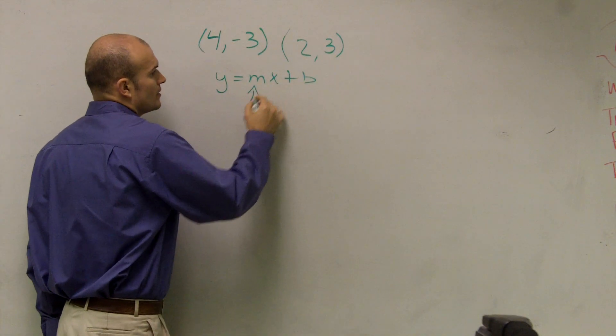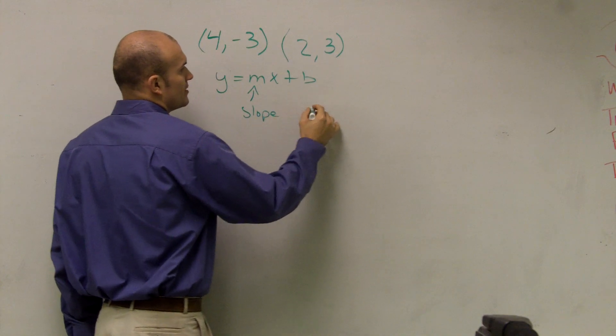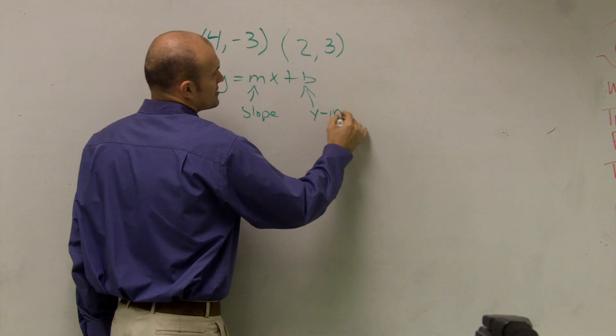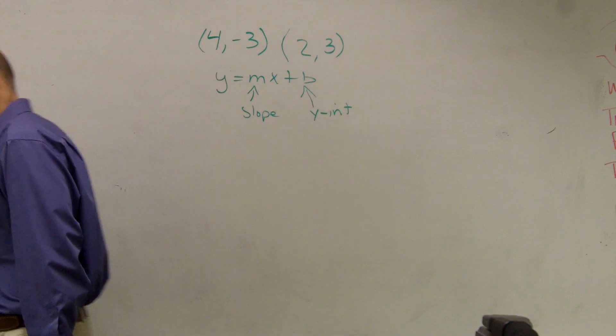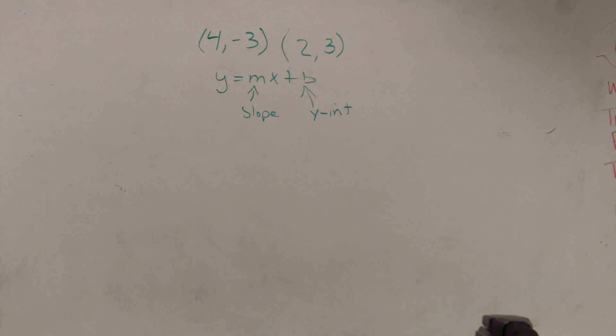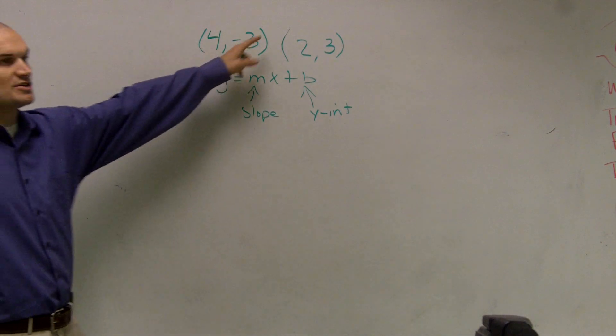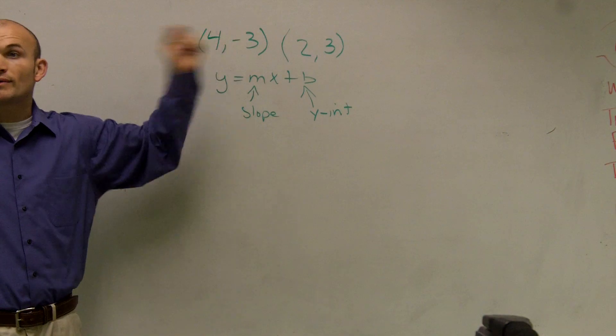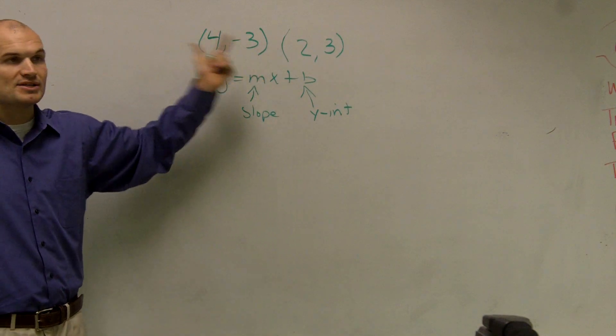Remember, m represents slope and b represents y-intercept. The problem is, we're only given two points - we don't know the slope or y-intercept yet. So I'm going to solve this.